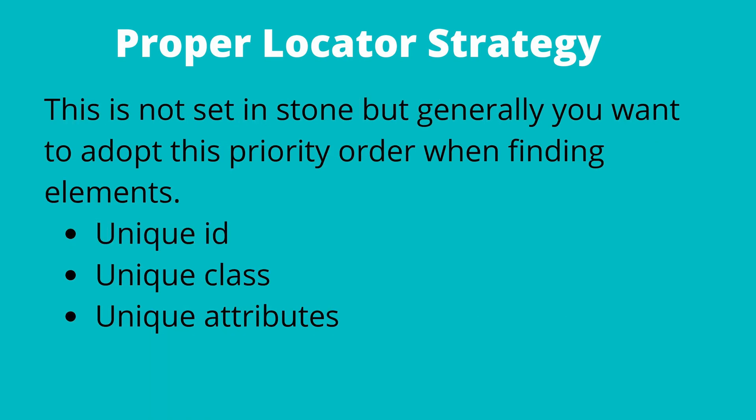Using the element selector that is most unlikely to change allows your automation to be as robust as possible. This is not set in stone, but generally you want to adopt this priority order when finding unique elements: a unique ID, then a unique class, and then you can use unique attributes. Developers play an important role in creating new web elements, and it is very important that they follow this hierarchy, first ensuring that elements have unique IDs where possible so that the application is more friendly for test automation and results in less flaky tests.